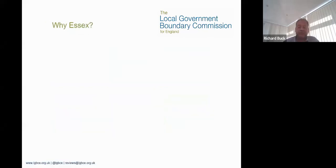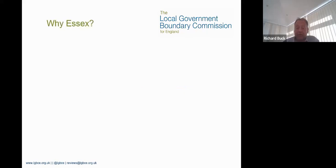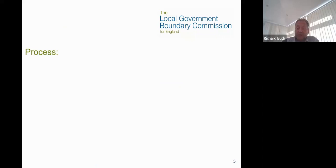Why are we reviewing Essex specifically? We have a responsibility set out in law to review every local authority from time to time. Essex hasn't had a review since 2004, so by the time this review is complete the current boundaries will have been set 20 years ago and may not be appropriate for a number of reasons. There are also poor levels of electoral equality in this authority — some councillors represent more or fewer electors than others — which is one of the key criteria we have regard to when drawing up new division boundaries.